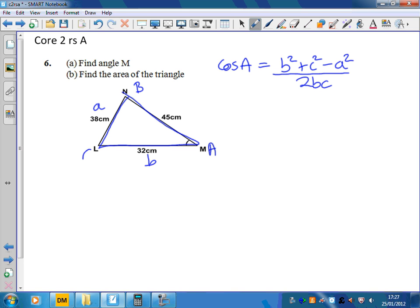B, L can be c. So that means the cos of M, so that's where my A is, that's the angle I want to find, is 32 squared plus 45 squared take away 38 squared divided by 2 times